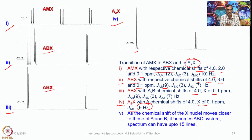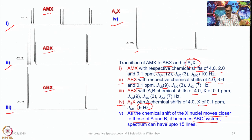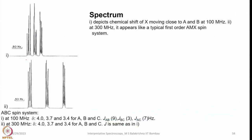Spectrum 3 represents an ABX system with A and B chemical shifts of 4 and 1 ppm, X at 0.1 ppm, with coupling constants of 9, 3, and 7 Hz as before. In the AX system, A has a chemical shift of 4, and J_AX is about 9 Hz. As the chemical shift of the X nucleus moves closer to those of A and B, it becomes an ABC system. Eventually, the spectrum can have up to 15 lines. A typical ABC spectrum is shown here.